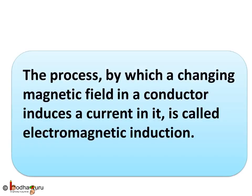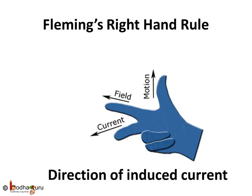Hello everyone, we already know the process by which a changing magnetic field in a conductor induces a current in it is called electromagnetic induction. The induced current is found to be the highest where the direction of motion of the coil is at right angles to the direction of magnetic field.